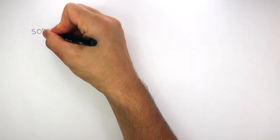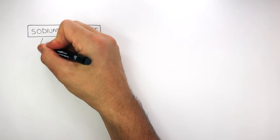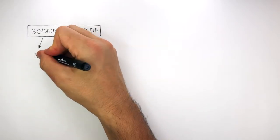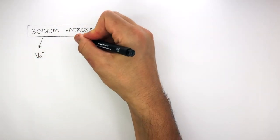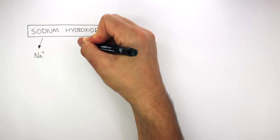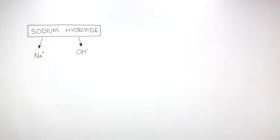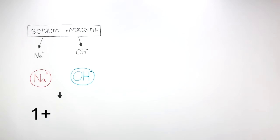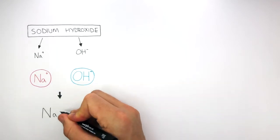Let's figure out the chemical formula of sodium hydroxide. Sodium is in group 1, so it always forms Na+ ions, and a hydroxide ion is always OH-. When we write out these ions, Na+ and OH-, we can see their charges cancel each other out: 1+ and 1- equals 0. So the chemical formula of sodium hydroxide is NaOH.